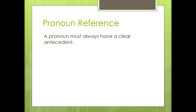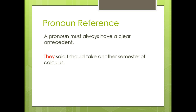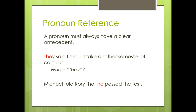When you use a pronoun, be sure that you have a clear antecedent. You've got to be sure that your reader can tell what the pronoun refers to. For example, they said I should take another semester of calculus — well, who is they? It's not clear. Michael told Rory that he passed the test. We're not sure who he refers to. Was it Michael or Rory who passed the test? So both of these sentences need to be modified for clarity.